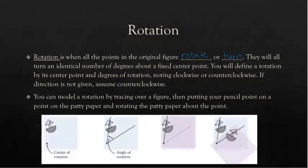Here we have a sailboat — the center of rotation is not on the figure at all. We draw our angle of rotation and then take a spot on our image and rotate it, moving it to the other side of the angle and redrawing that image. Or if we have it traced on patty paper, we can just turn that patty paper about the center of rotation.